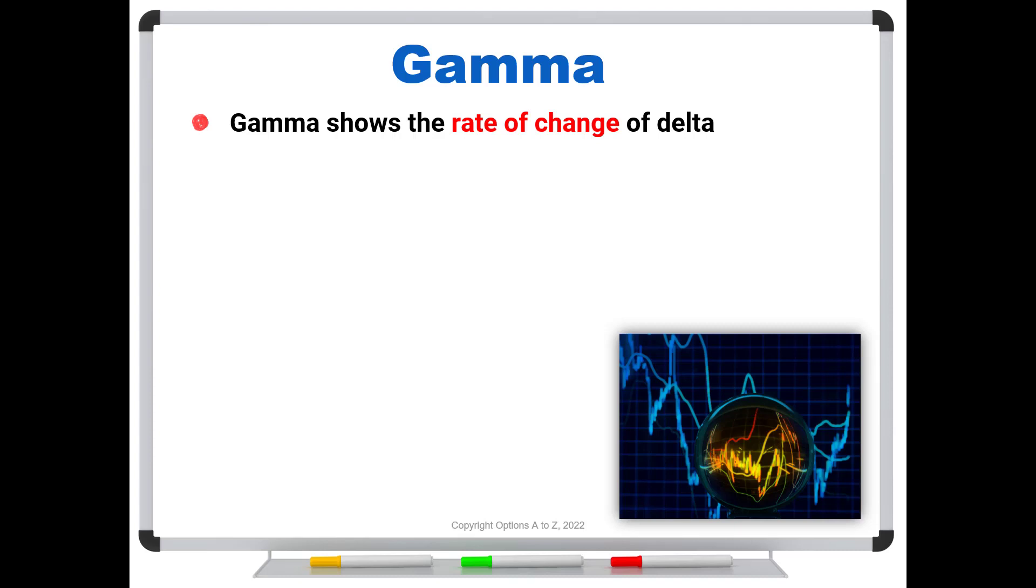So for instance, let's say that we have a $100 call trading for $5. Broker's platform says that the delta is 60. And it also tells us that the gamma is 5 or 0.05. What this means is that if the stock makes a $1 move right now, let's say to $101, the $100 call would be expected to pick up 60% of that dollar move. That's what the delta is telling us.